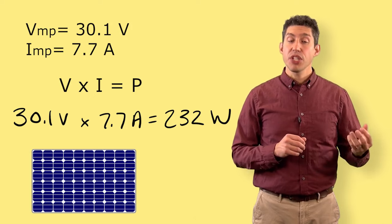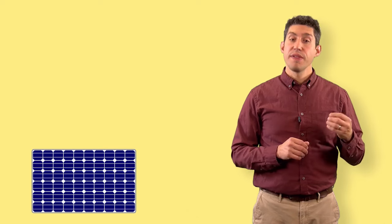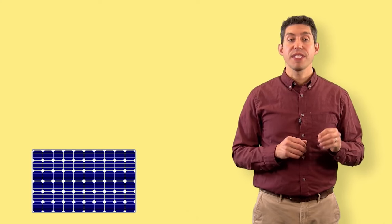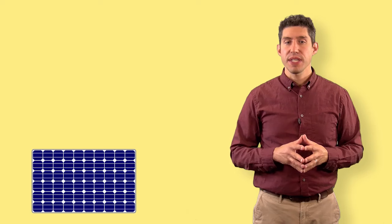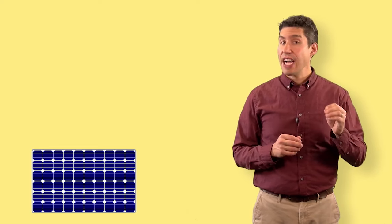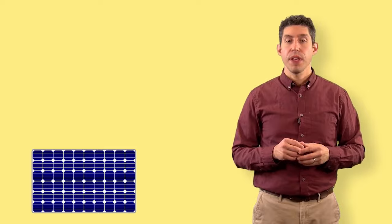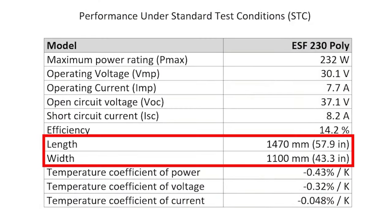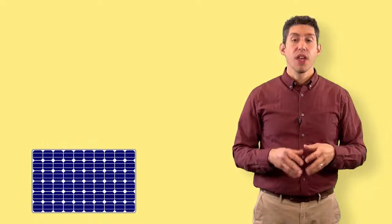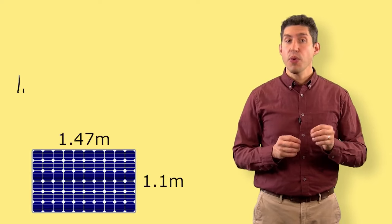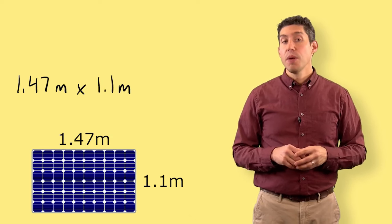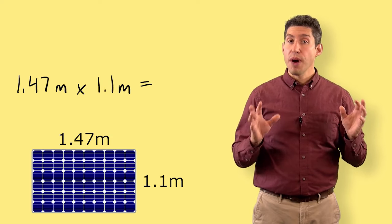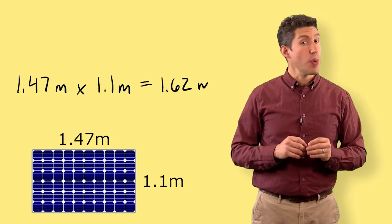The VMP and IMP are based off of standard test condition light levels. However, the panel is not one square meter in size, so we'll have to adjust for the size of the actual photovoltaic panel. The dimensions of the panel are listed on the specification sheet as well in units of length and width, usually inches and millimeters. For this particular panel, the length is 1.47 meters by 1.1 meters wide. Multiplying these two together gives an overall module area of 1.62 square meters.